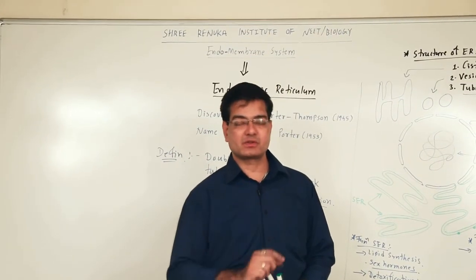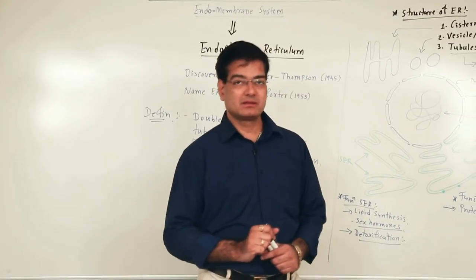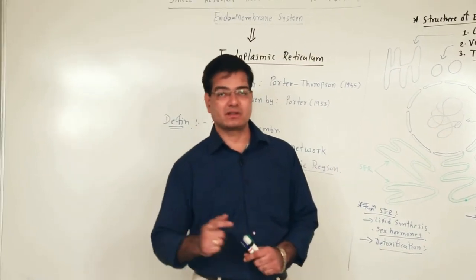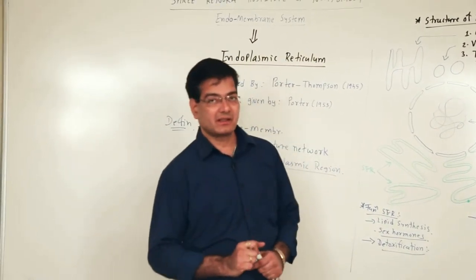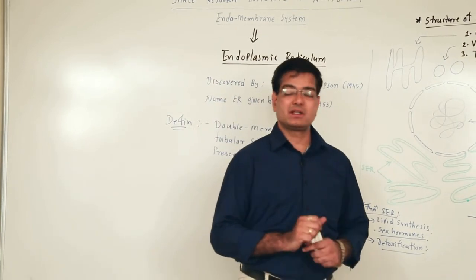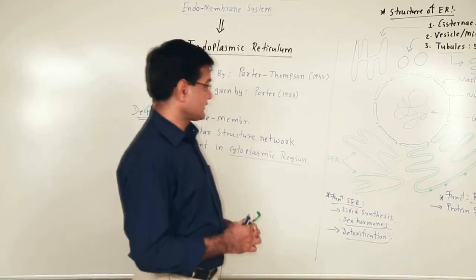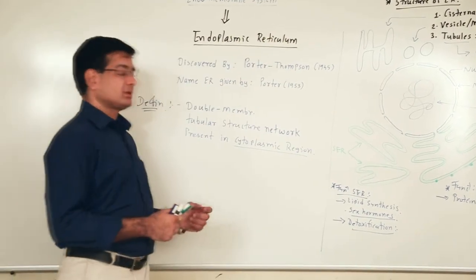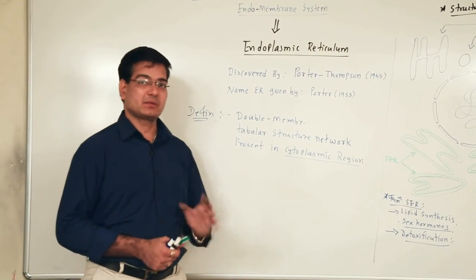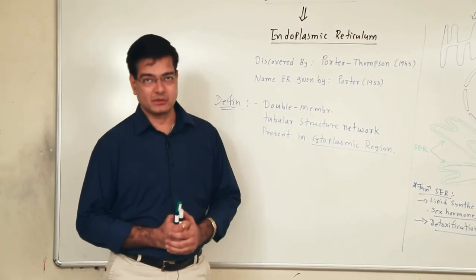Other functions of the endoplasmic reticulum include the formation of other cell organelles like glyoxisomes, which are formed with the help of rough endoplasmic reticulum. This way, the double membranous tubular network-like structure present in the endoplasmic region is the endoplasmic reticulum.